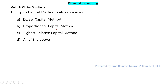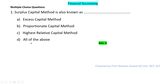Surplus capital method is known as excess capital method, proportionate capital method, and highest relative capital method. So all of the above, that is option D, is the right answer.